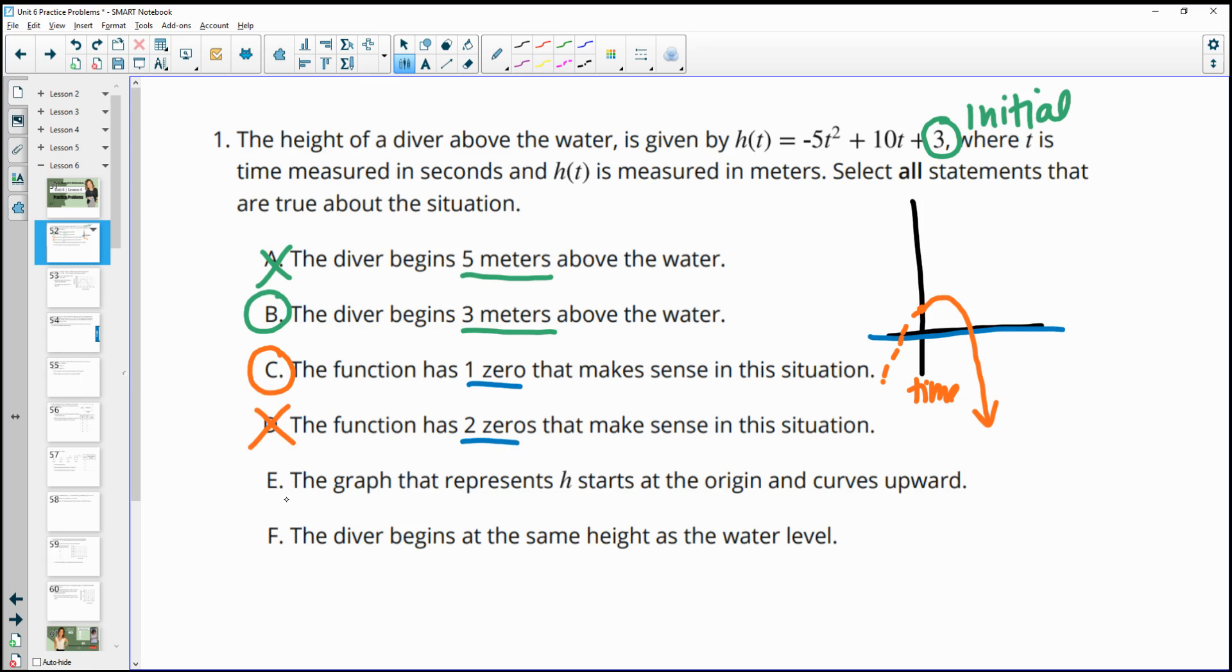Then it says in E, the graph that represents h starts at the origin and curves upward. Well, the origin is zero. That would mean an initial height is zero, first of all, which is not going to happen. And then the negative flips this function over. So this function is going downward, not upward. So there's multiple things wrong with this. Definitely not at the origin and definitely not going upward.